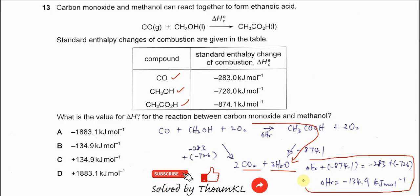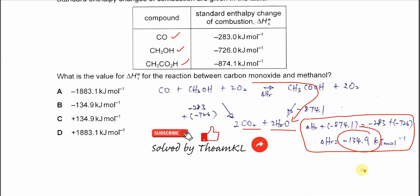After that you just try to rearrange, calculate, you get negative 134.9 kilojoules per mole, right, which is B. So this is the way to calculate for this question. That's all, thank you.